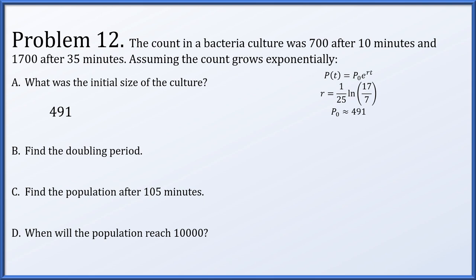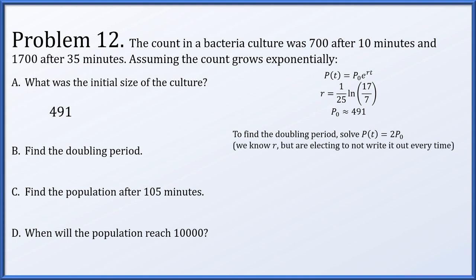Next, find the doubling period. We solve for t when the population equals twice the initial population. Setting p0 times e to the rt equal to 2 times p0, the p0s cancel, leaving e to the rt equals 2. Taking a log of both sides and dividing by r, then plugging in r equals (1/25) times natural log of 17 over 7, we get t equals 25 times the natural log of 2 divided by the logarithm of 17 over 7, which rounds to about 19.53 minutes.